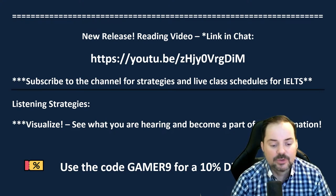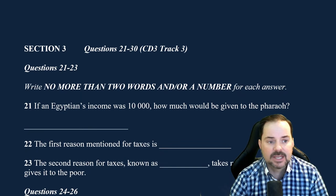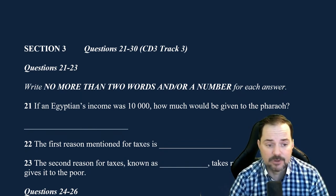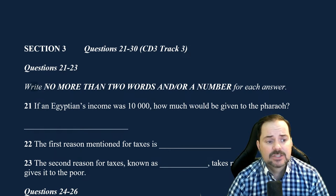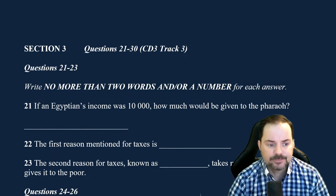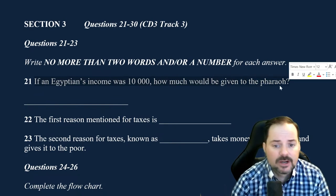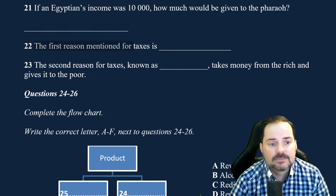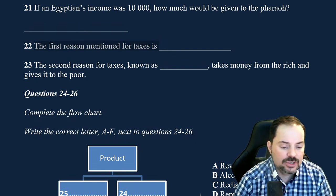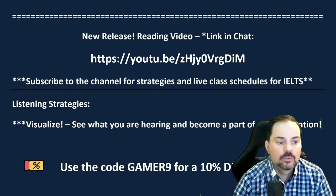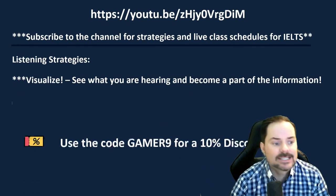Let me show you what I mean. We'll jump to our reading test — this is the third exam from our first exam book on the website. This was about taxes. The question says write no more than two words and/or a number for each answer. For example: if an Egyptian's income was 10,000, how much would be given to the Pharaoh? Now, when you picture taxes, what can you see? How do you visualize taxes? It's kind of an abstract topic, so here's a good question — how do you visualize taxes?